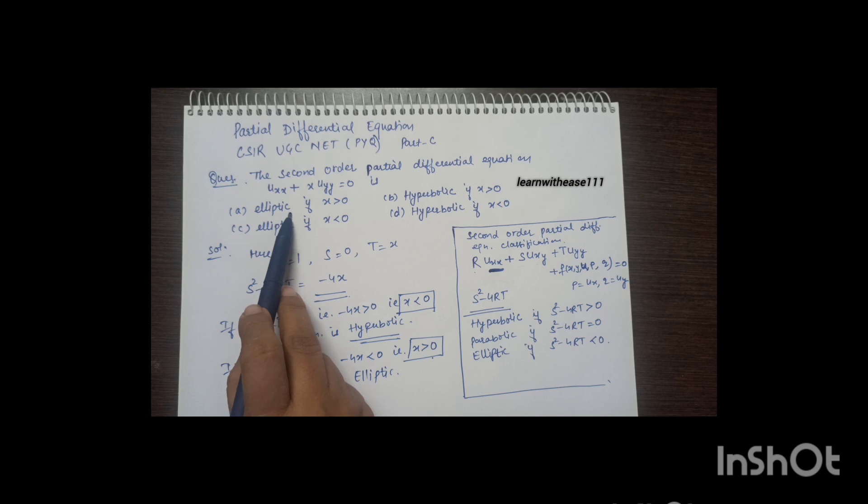For elliptic, x should be positive, and for hyperbolic, x should be negative. So the answer is options a and d.